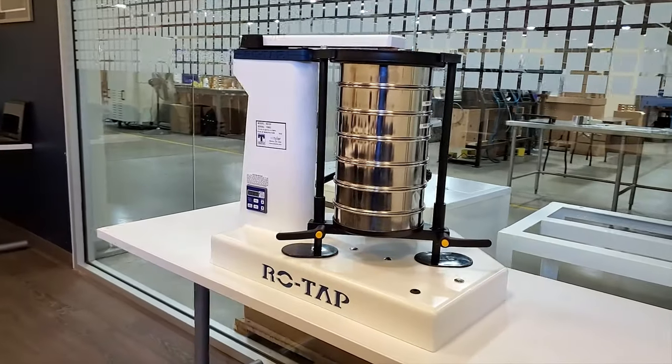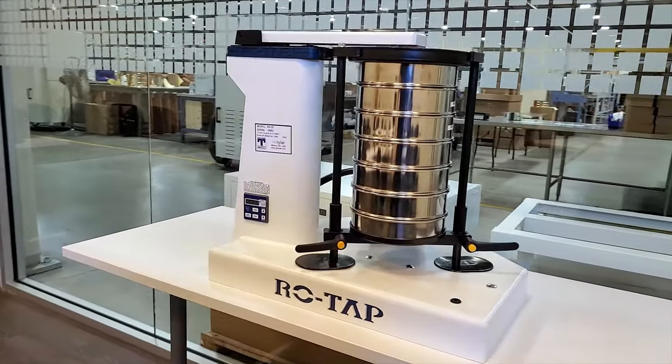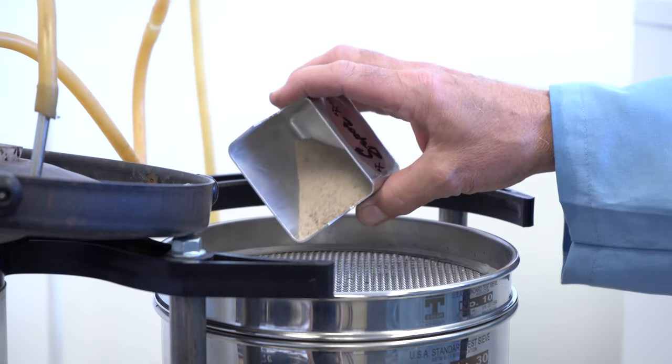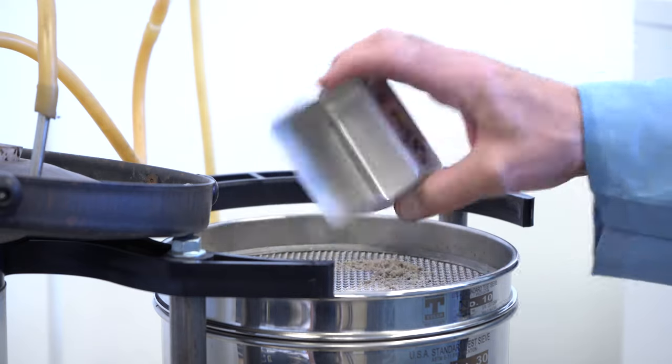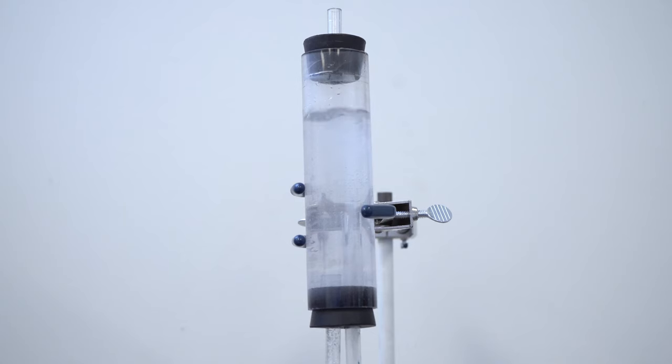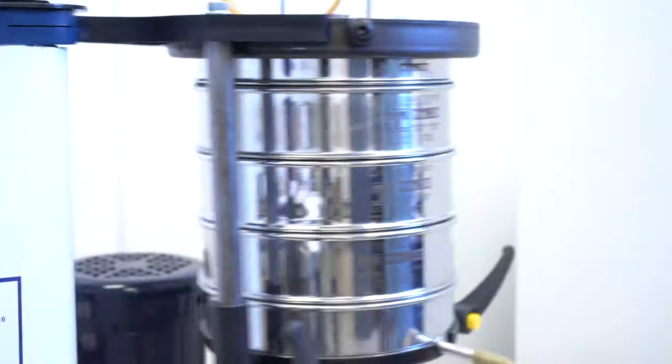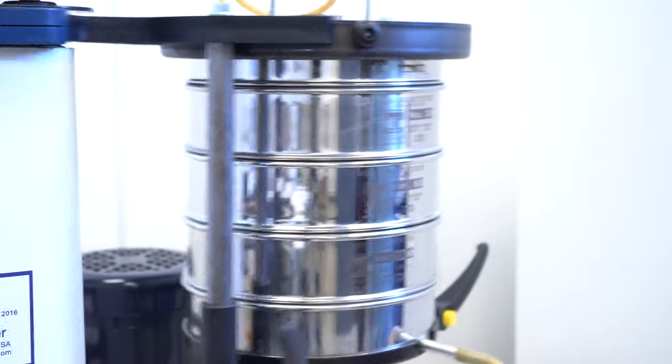Assemble the wet test kit on a conventional RX 29 ROTAP. Deposit the dried sample material on the top test sieve. Slowly turn on the water source to ensure that no water leaks out the side of the sieves. Set the timer to your desired test time and turn on the ROTAP. When the test is complete allow the water to drip out of the drain pan.